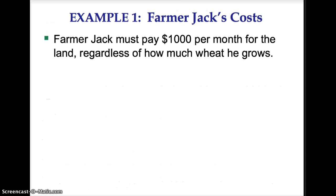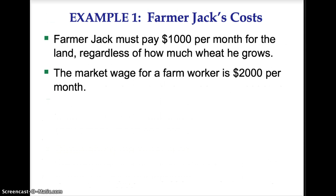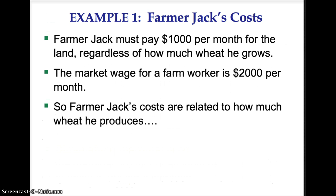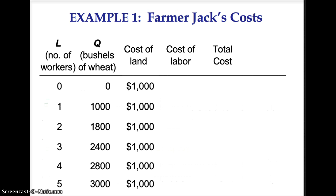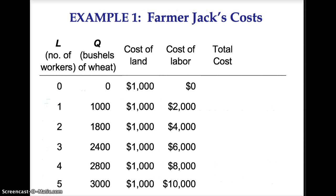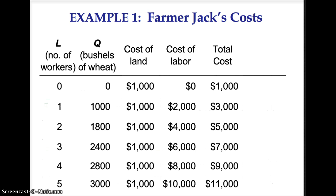Farmer Jack must pay $1,000 per month for land, regardless of how much wheat he grows. The market wage for a farm worker is $2,000 per month, so Farmer Jack's costs are related to how much wheat he produces. The cost of land stays fixed at $1,000 at all quantities. Each worker costs $2,000, so labor costs go from $0 to $2,000 to $4,000 and so on. Total cost is the sum of the cost of land and the cost of labor, starting at $1,000, then $3,000, $5,000 and so on.